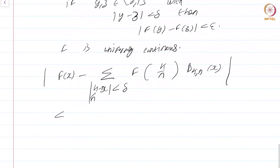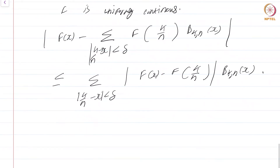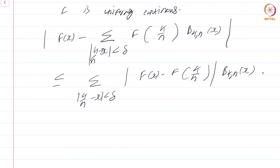We need to analyze |Σ_{|k/n − x| < δ} f(k/n)·b_{kn}(x) − f(x)·(partial sum)| ≤ Σ_{|k/n − x| < δ} |f(x) − f(k/n)|·b_{kn}(x). Since we are summing over those k/n's where |k/n − x| < δ, by uniform continuity |f(x) − f(k/n)| < ε, so this sum is less than ε · Σ b_{kn}(x) = ε.